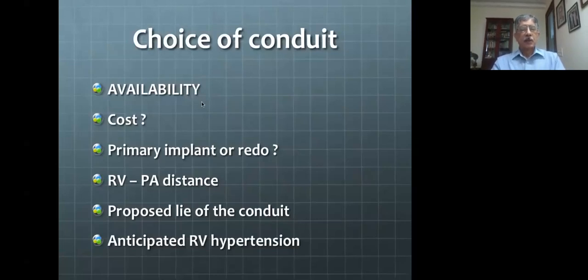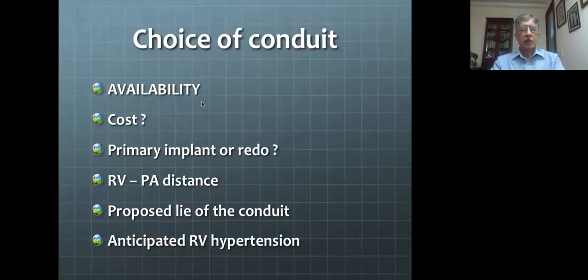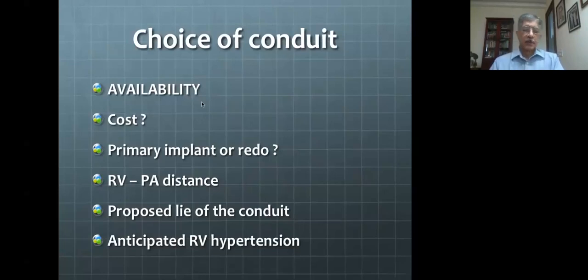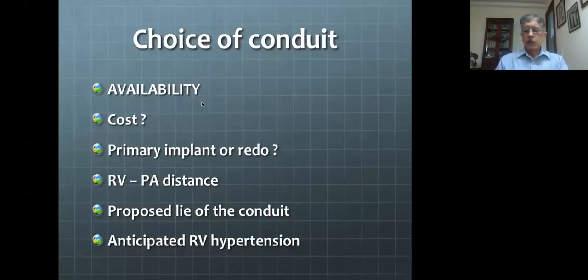It is also important whether the patient is likely to have right ventricular hypertension postoperatively. If the distal pulmonary artery bed is inadequate — borderline pulmonary artery hypoplasia — you expect some degree of RV-PA gradient, and when there is RV hypertension the conduit is subjected to higher pressure. If you use a conduit like the Contegra, which has no rigid support, it may distend or become aneurysmal. So if pulmonary vascular disease or borderline pulmonary arteries are present and elevated RV pressure is expected, it is preferable to use a Dacron conduit rather than the Contegra.